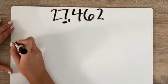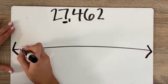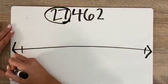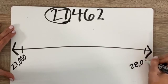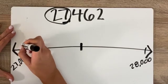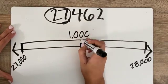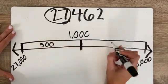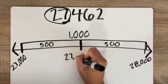I'm rounding to the nearest thousand. I say, how many thousands do I have in 27,462? Well, I have 27,000. So 27,000 would be my low one, and if I had one more thousand it would be 28,000. My halfway point is what I need. Because the difference is 1,000, I know that 500 plus 500 equals 1,000. So the middle number has to be 27,500.